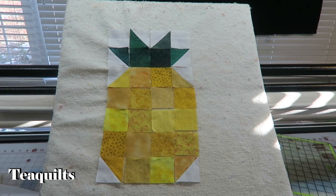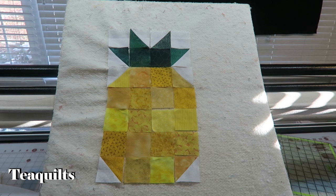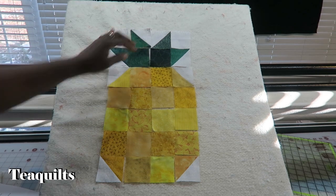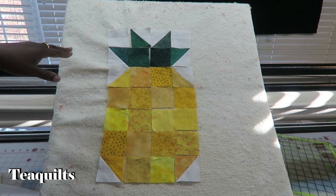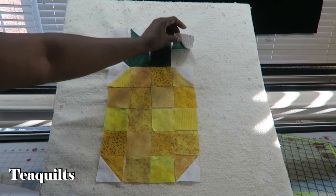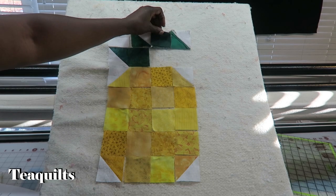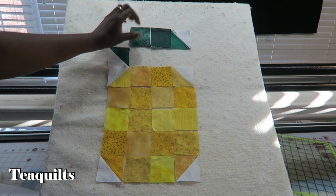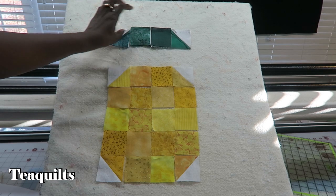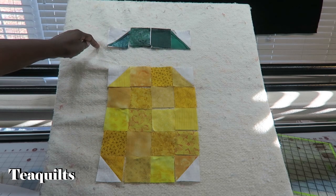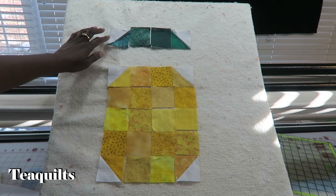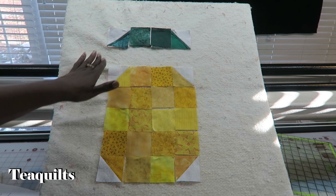Now the next step is just to sew this into a larger block. What I'm going to do is I'm going to do some chain piecing. I'm actually going to be flipping my rows so that I can add as I go and just chain piece down. When I get to the end, I will leave all of this chain.